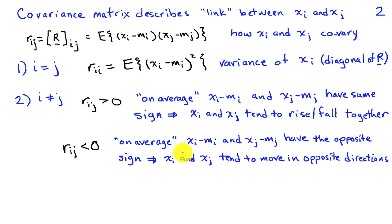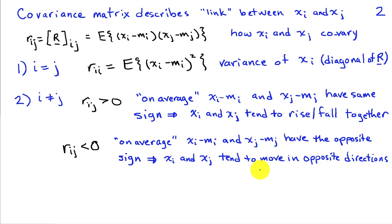If r sub ij is less than zero, then on average the deviations of xi and xj from their means have opposite signs, meaning xi and xj tend to move in opposite directions. When xi is positive relative to its mean, xj tends to be smaller than its mean, and vice versa. The final case is when r sub ij equals zero: on average there's no consistent relationship between the sign of xi relative to its mean and xj relative to its mean. We would say that xi and xj are uncorrelated.